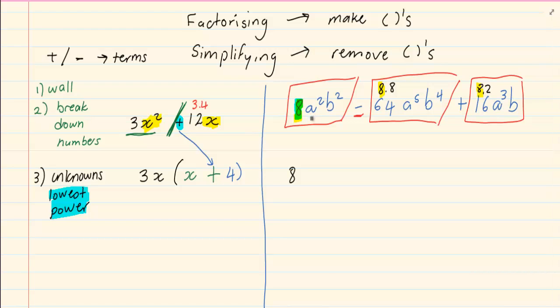If you look at the a we have got a squared in the first term, a to the power of 5 in the second term and a to the power 3 in the third term. The lowest one is a to the power 2.